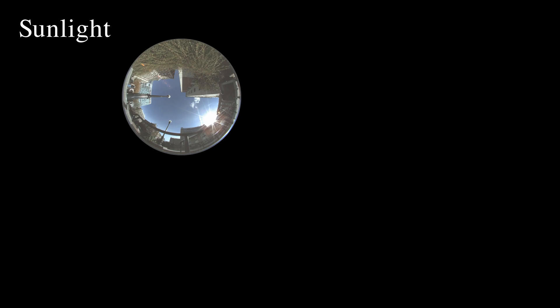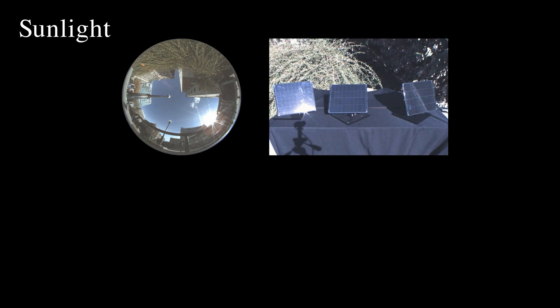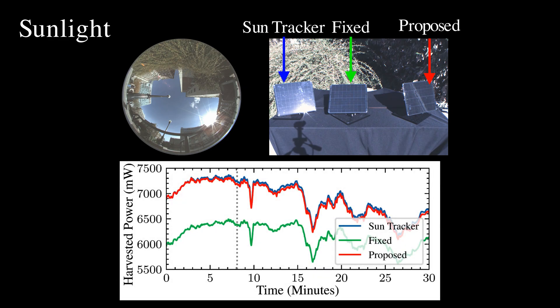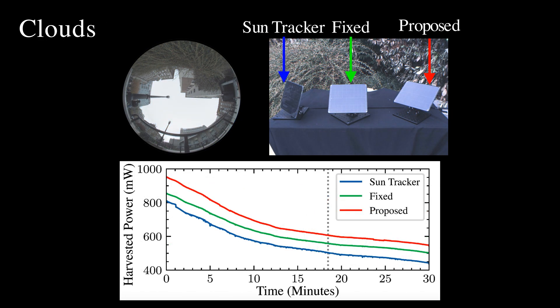The researchers test this system in five different scenarios. The first scenario is when the solar panel has direct sunlight exposure. The baseline we compare against are a solar panel that tracks the sun and a panel fixed in a static orientation toward the equator. This part shows the harvested solar energy over time. The vertical dash line marks the moment when the photo of the solar panels was taken. As expected, when direct sunlight is visible, both the sun tracker and the proposed method perform very well.